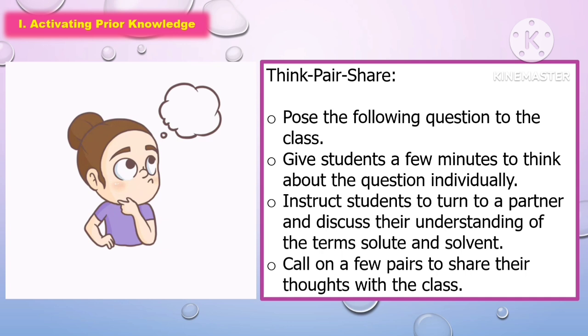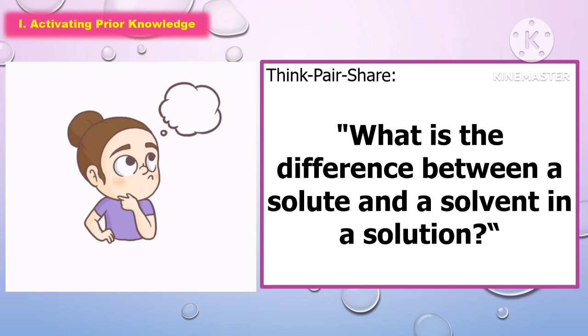In activating prior knowledge, students will do the think, pair, and share. Post the following question to the class and give students a few minutes to think about the question individually. Then instruct students to turn to a partner and discuss their understanding of the terms about solute and solvent. Finally, call on a few pairs to share their thoughts with the class.